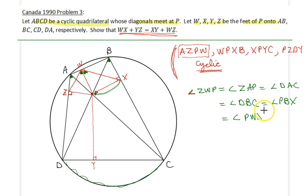But then we came at a situation where we realize that WP is an angle bisector. WP bisects angle ZWX.